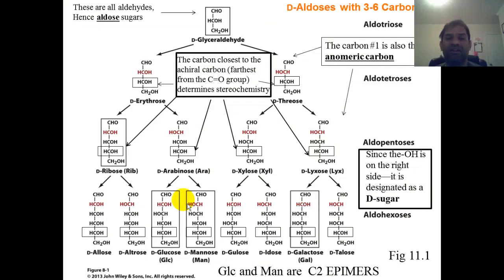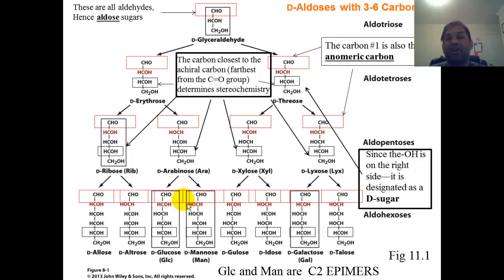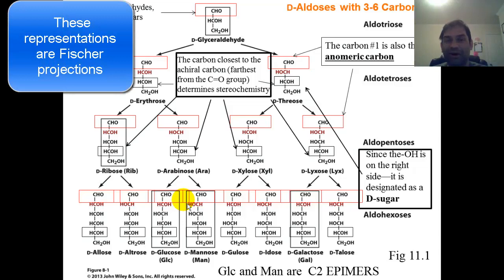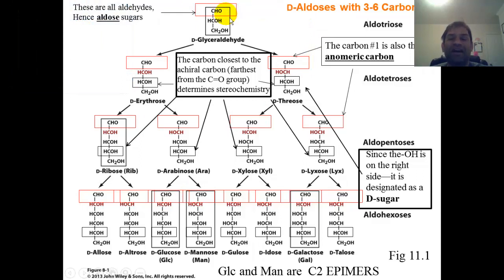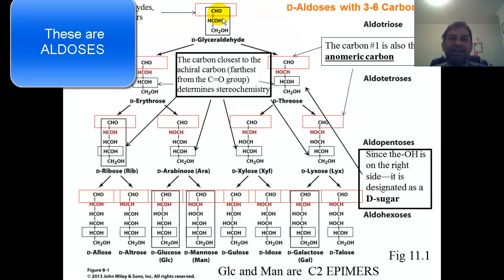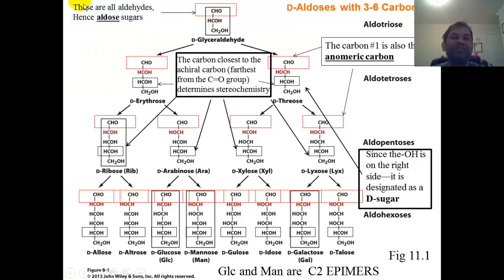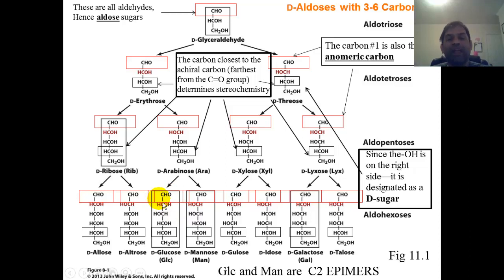I'm going to spend a lot of time on this slide and go purposely slow. First, all of these are Fischer projections — a type of representation. In no way does an actual sugar look like this. The CHO highlighted in red is the aldehyde moiety, a functional group that is C double-bond O-H. All you see here are aldehydes. Glyceraldehyde is the simplest aldehyde, and as we add HCOH units, we build up to six carbons, giving us glucose. These are aldehyde sugars, so we call them aldoses.